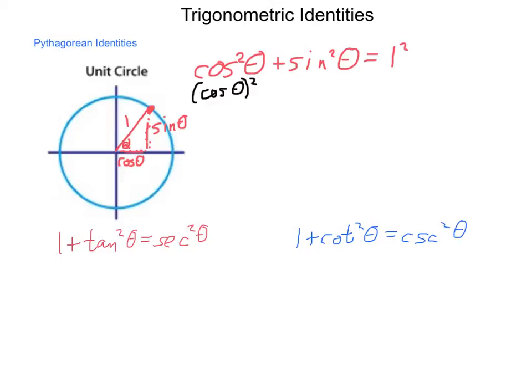So if cosine squared theta plus sine squared theta equals 1, we can use the commutative property of addition: sine squared theta plus cosine squared theta equals 1. If we isolate sine squared, that gives us sine squared of theta equals 1 minus cosine squared of theta. We can get the same argument by isolating cosine. Using these, let's prove a couple more identities.